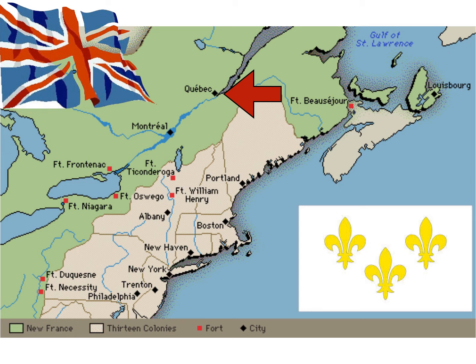You might recognize Ticonderoga — you might have a pencil with that name on it — and it was also a fort during the French and Indian War. But I want to focus where the red arrow is pointing today, and that's Quebec City. We learned about Quebec City earlier this year when we talked about the explorers — Samuel de Champlain arrived in what would be Canada and started Quebec. Quebec City is inside the province of Quebec the same way New York City is inside New York. It sits on the St. Lawrence River, and it's going to be the scene of the most important battle of the French and Indian War.